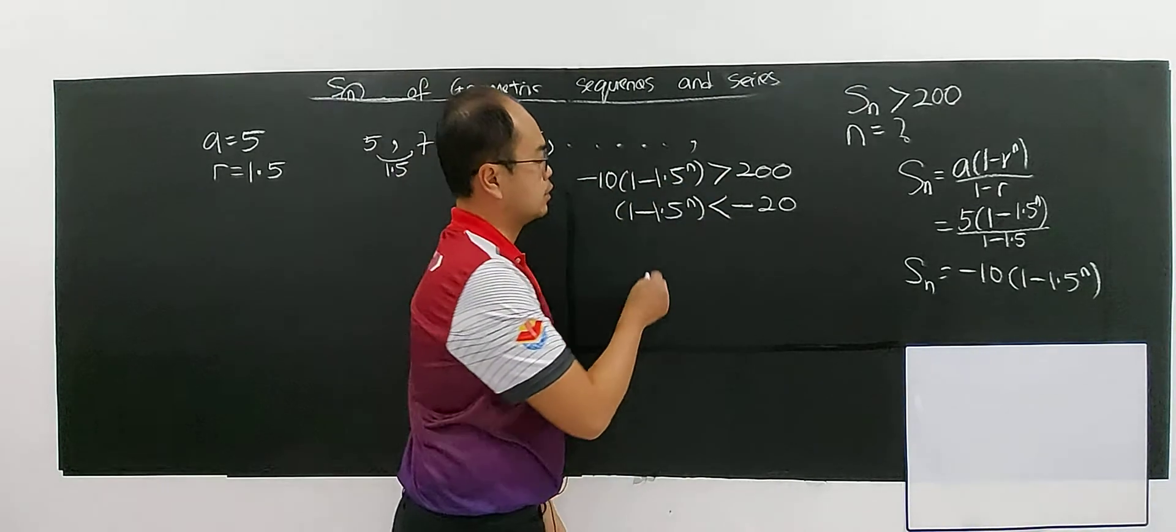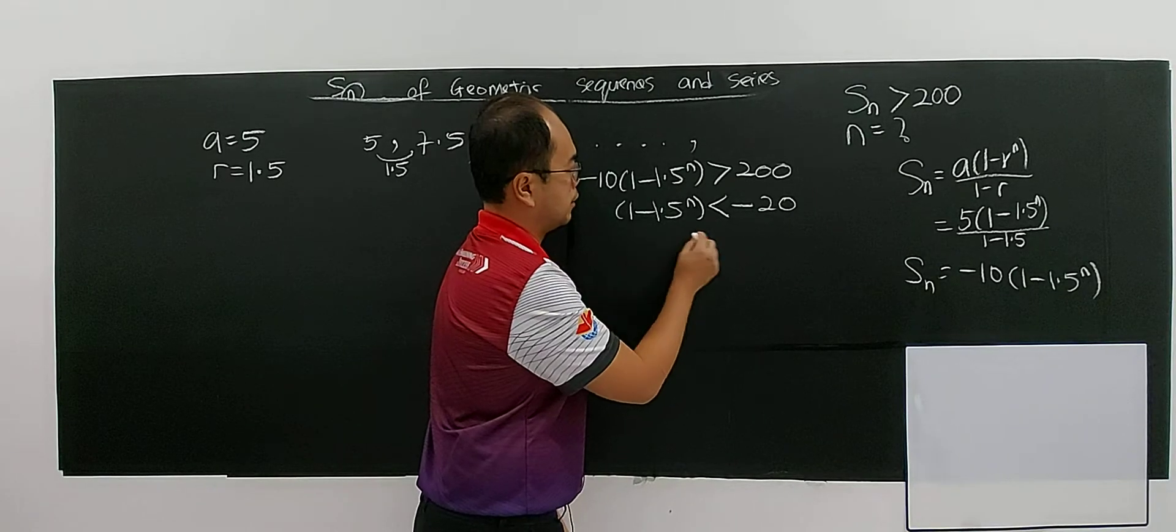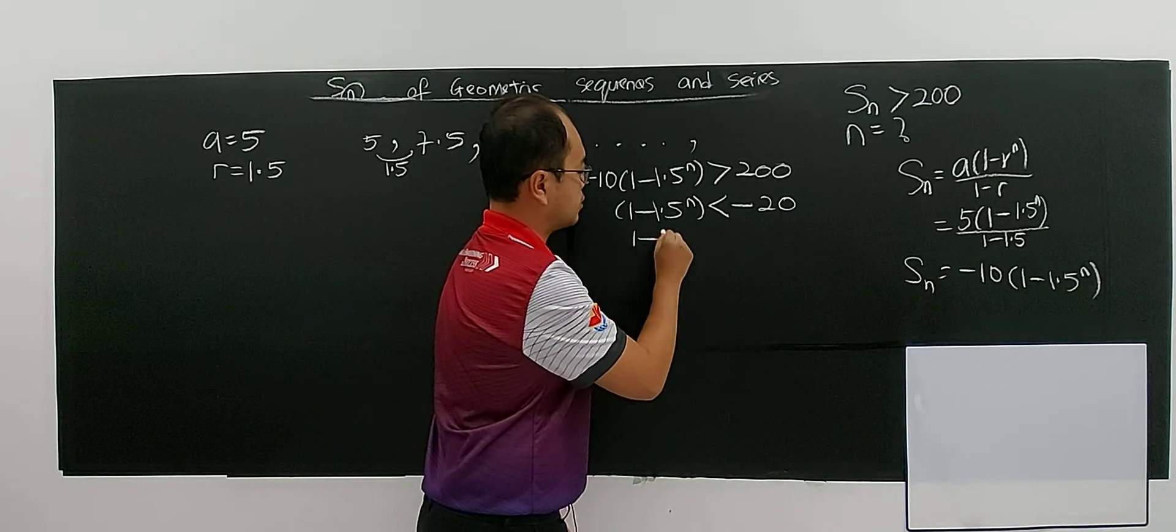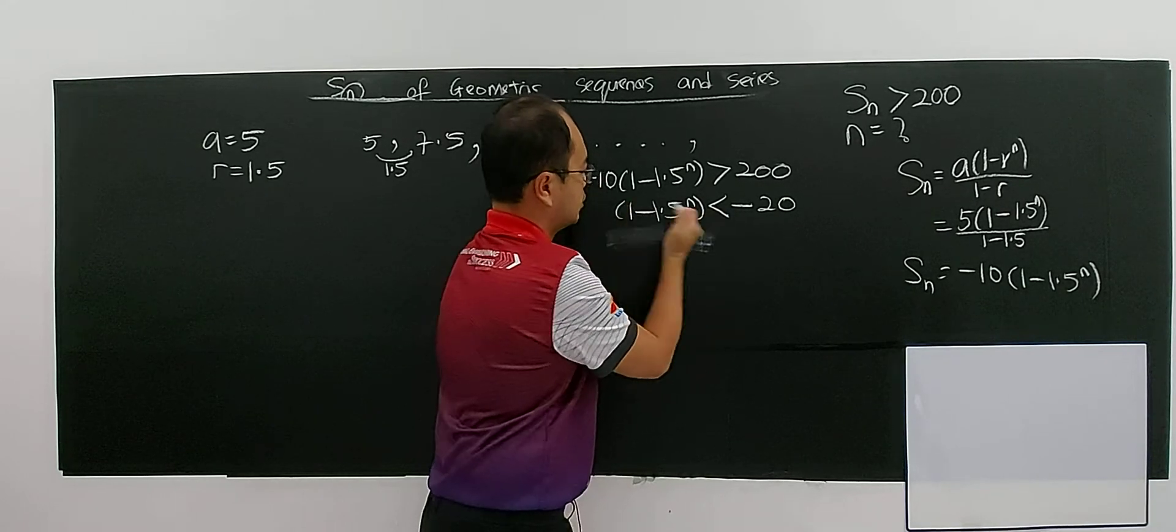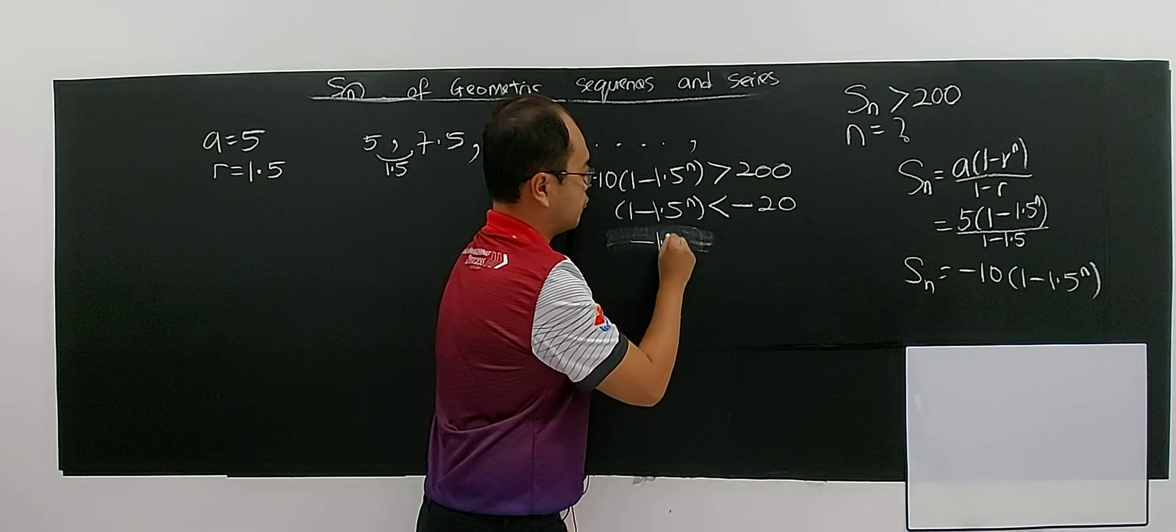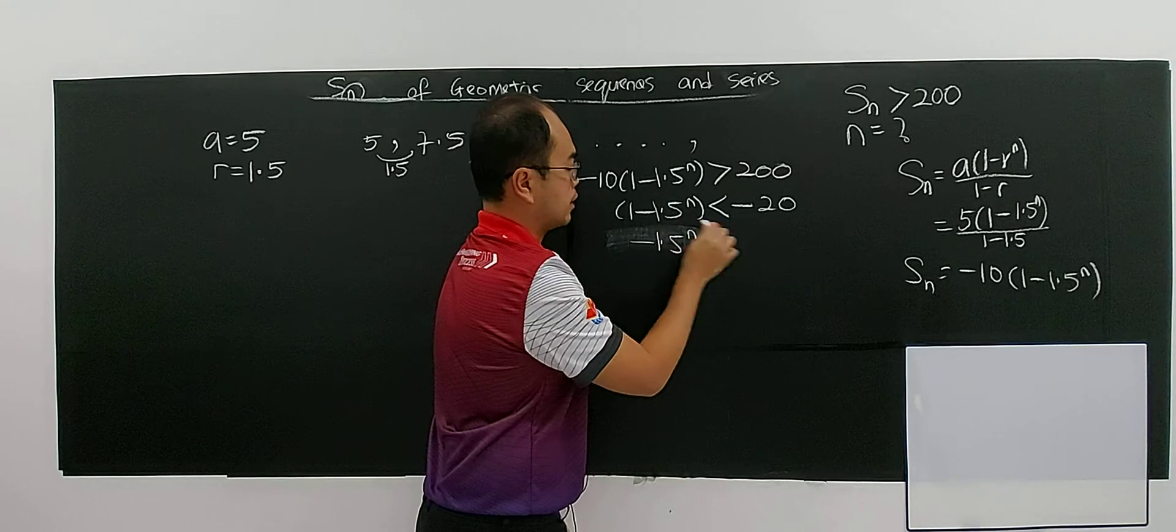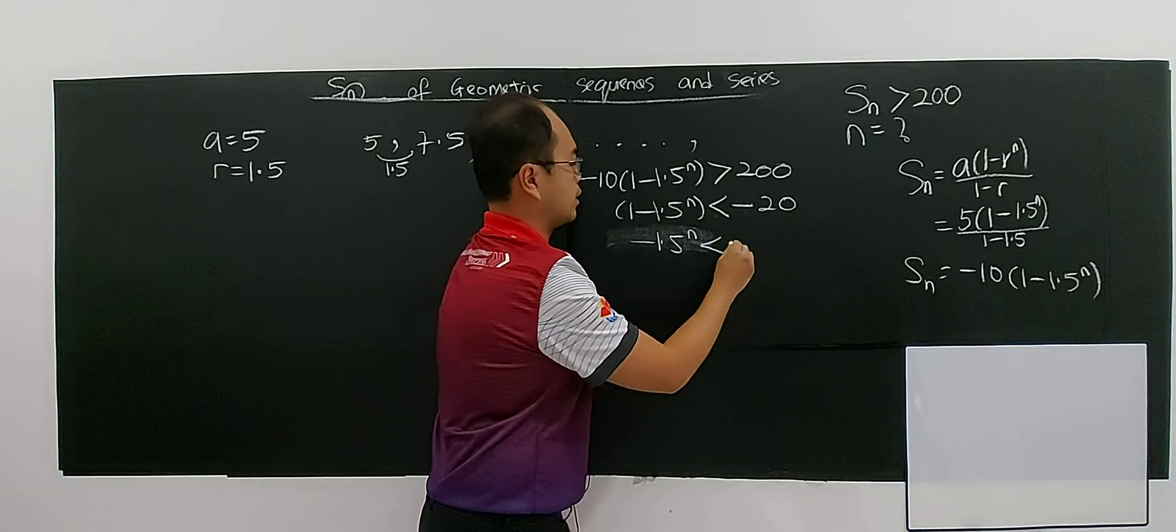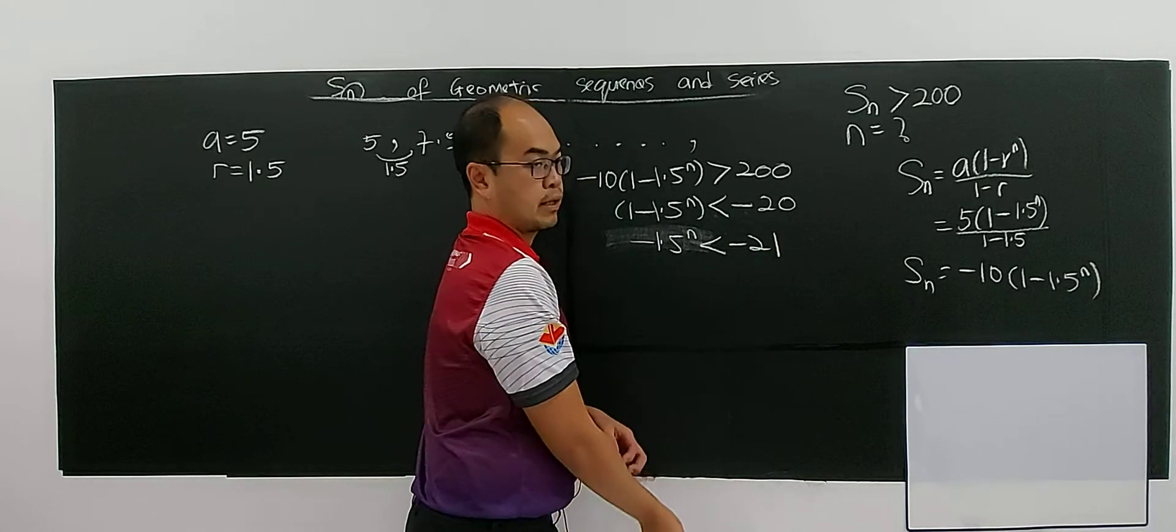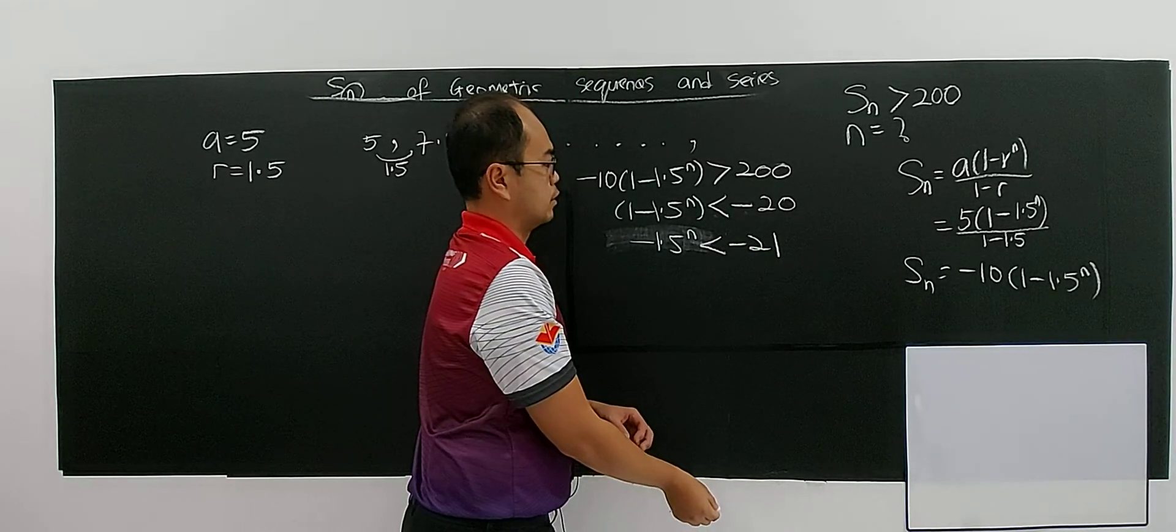So then you have 1 minus 1.5 to the power n less than negative 20. So you have negative 1.5 to the power n less than negative 20 minus 1, negative 21.